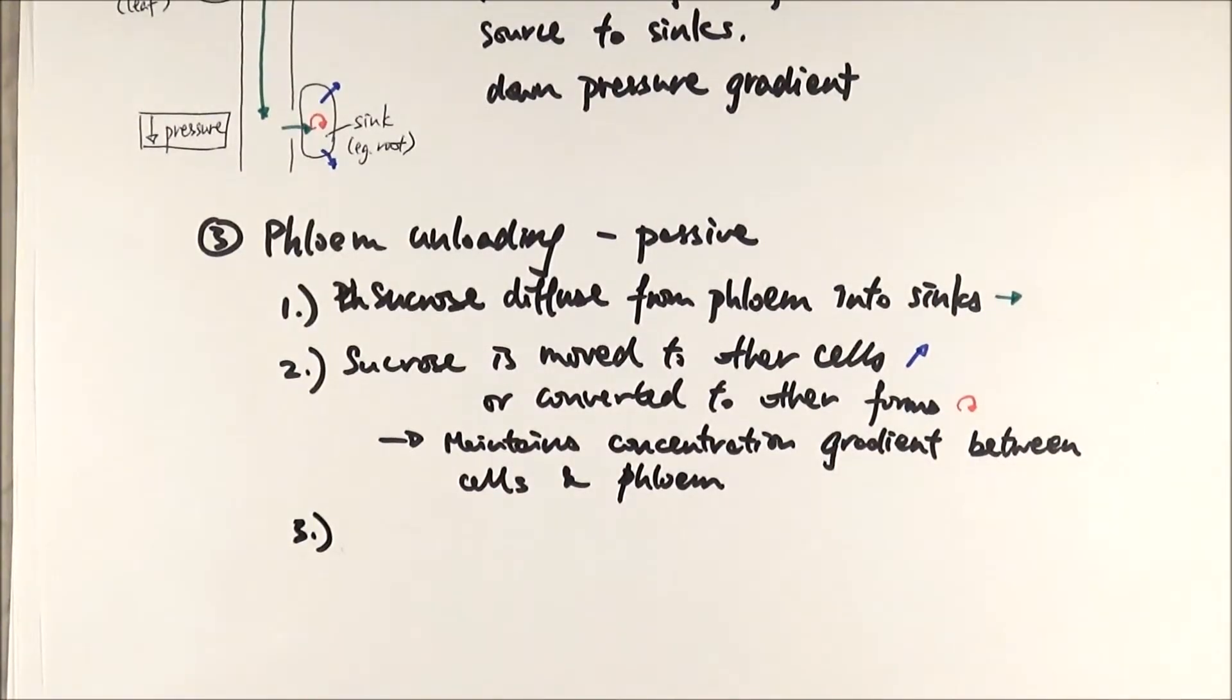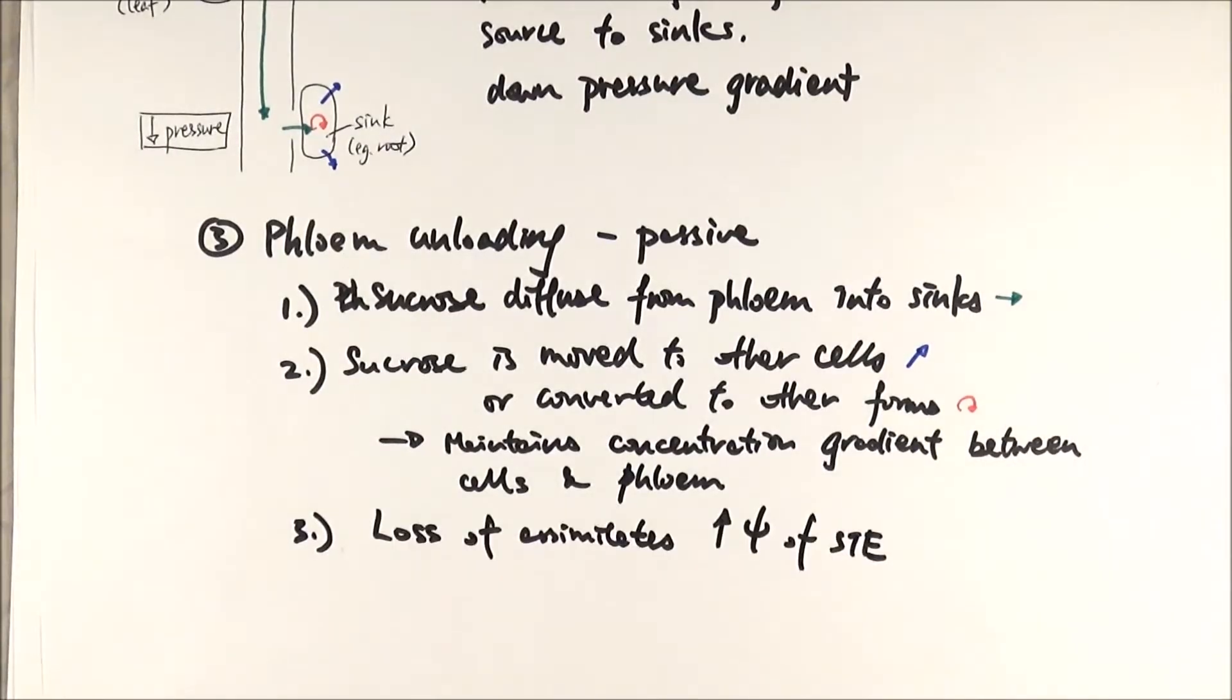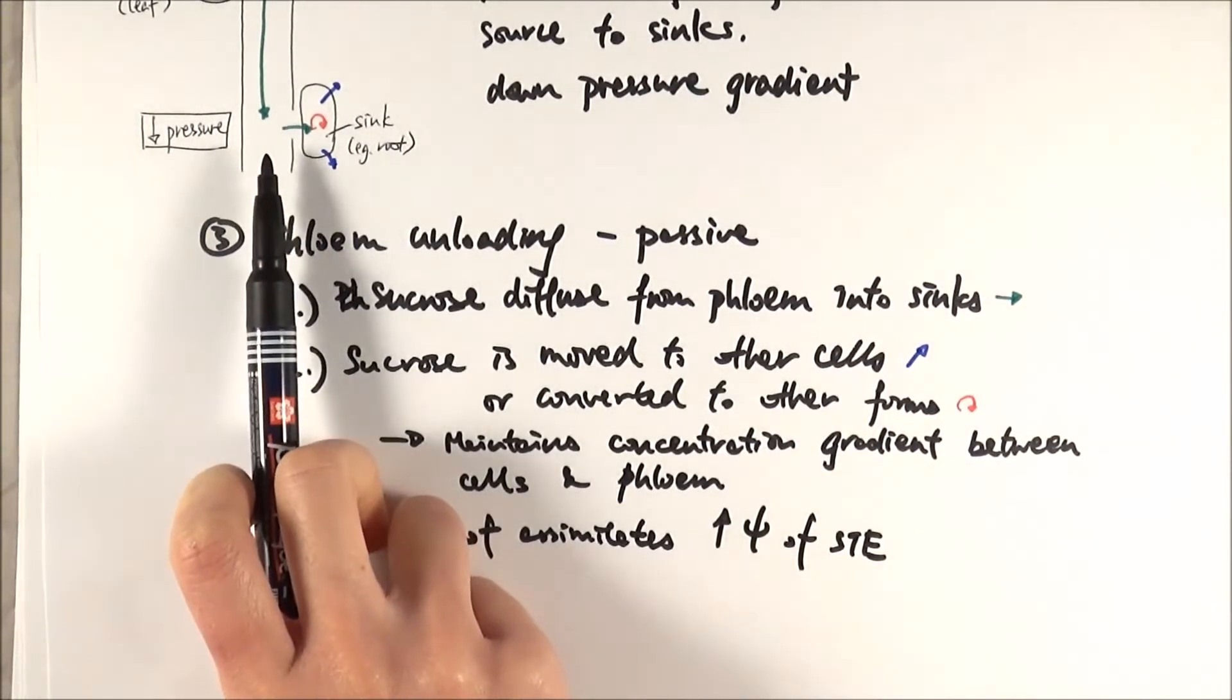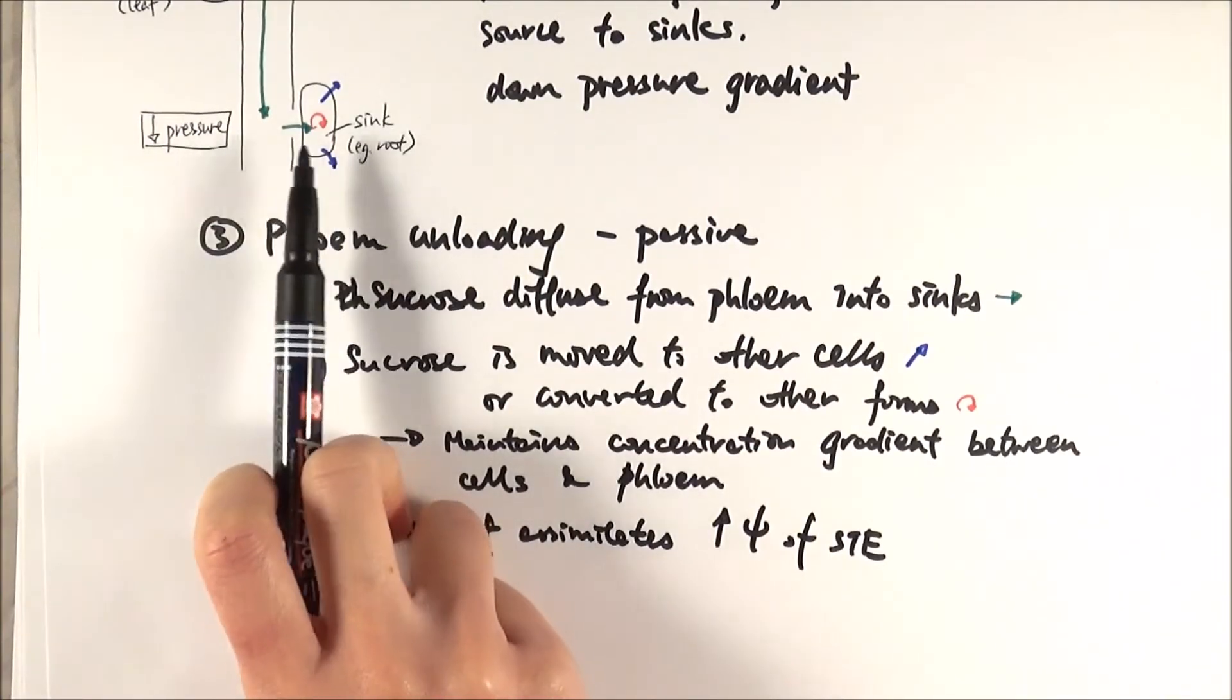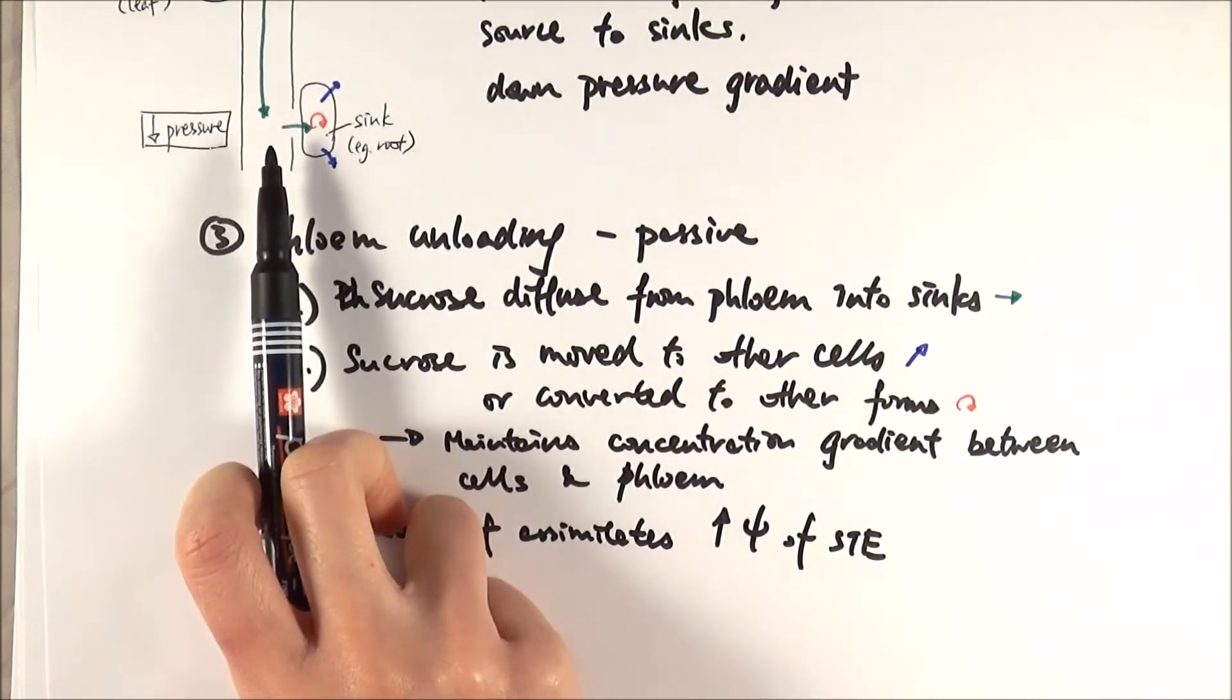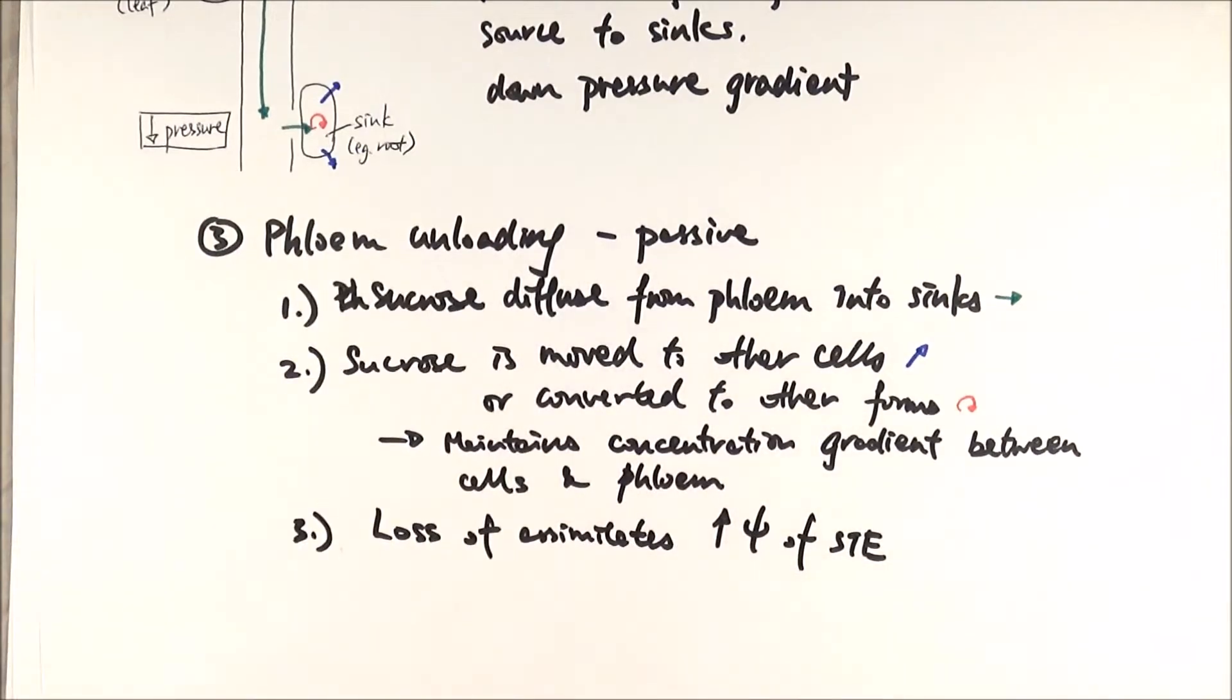Then finally, because you are losing the assimilates in the phloem elements, you are therefore increasing the water potential. And therefore, because you have a higher water potential in here now than out there, the water will naturally move by osmosis from a high water potential to a low water potential area.